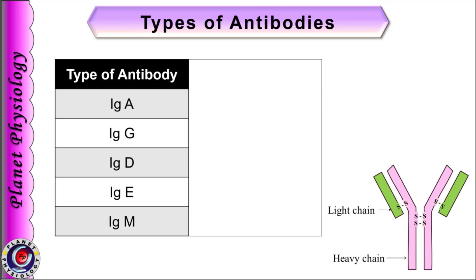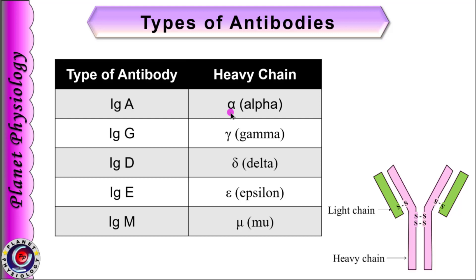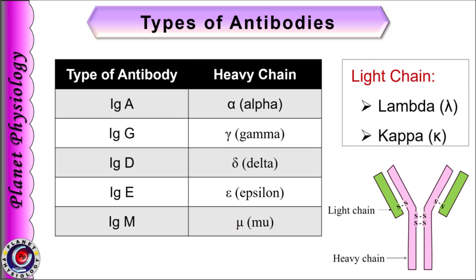Depending on the type of heavy chains, antibodies are classified into 5 types: IgA, IgG, IgD, IgE and IgM. IgA consists of alpha heavy chain, IgG with gamma chain, IgD with delta, IgE with epsilon and IgM with mu chain. There are only 2 types of light chains, lambda and kappa, and each antibody contains 2 identical light chains, i.e., either both kappa chains or both lambda chains.